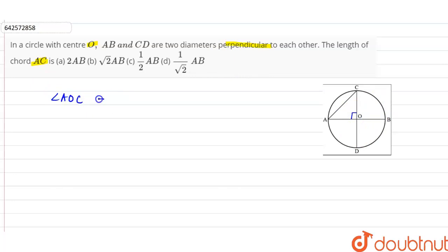...that angle AOC is equal to 90 degrees. Also it is given that AB and CD are the diameters, so we can say that AO, right, AO is...